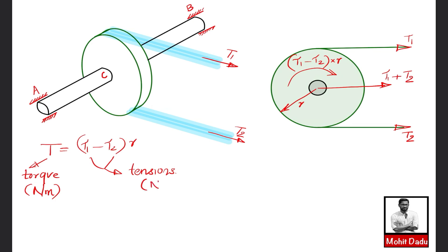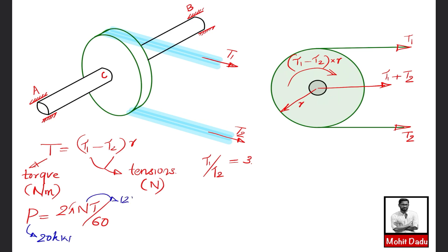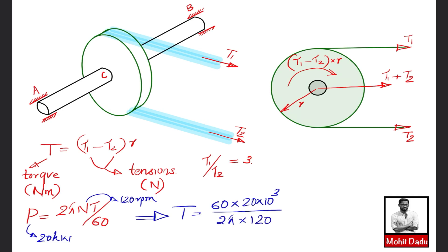To find the torque, we use: Power = 2πNT / 60. With power = 20 kW and N = 120 rpm, rearranging gives T = (60 × 20 × 10³) / (2π × 120), which equals 1590 newton-meters. This is the net twisting moment for this problem.